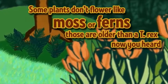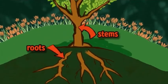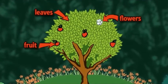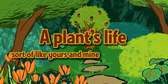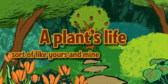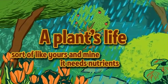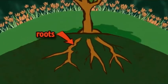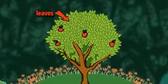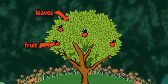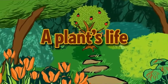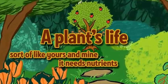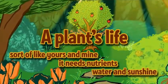Some plants don't flower, like moss or ferns — those are older than the T-Rex, now you heard. Plants have roots, stems, leaves. Many have fruit, flowers, seeds. A plant's life is sort of like yours and mine. It needs nutrients, water, and sunshine.